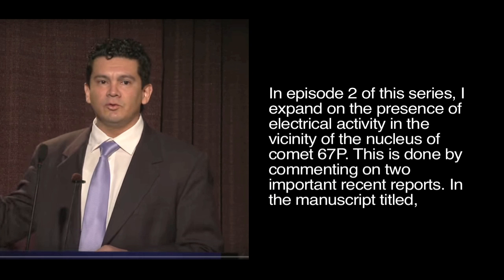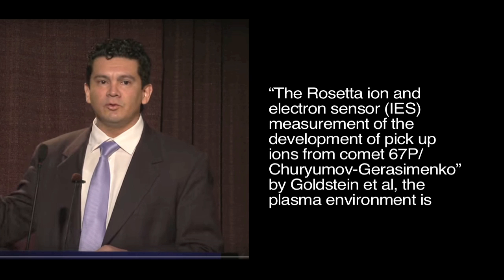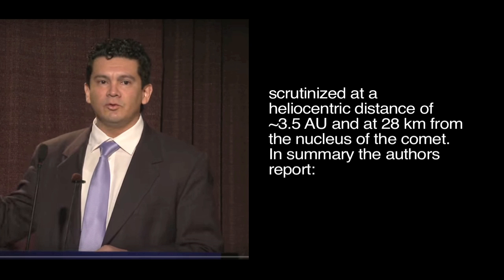In Episode 2 of this series, I expand on the presence of electrical activity in the vicinity of the nucleus of Comet 67P. This is done by commenting on two important recent reports. In the manuscript titled The Rosetta Ion and Electron Sensor IES Measurement of the Development of Pickup Ions from Comet 67P Churyumov-Gerasimenko by Goldstein E. Hall. In summary, the authors report: